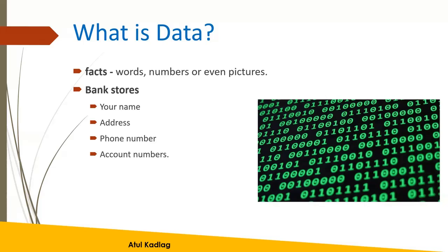For example, when we open an account at a bank, the bank generally stores our name, address, phone number, and account number — that is our data. Similarly, at a grocery store, the shop owner can store your information whenever you make a purchase. In today's digital world, everything that happens gets stored somewhere, because we are so modernized that everyone's data is being stored everywhere.